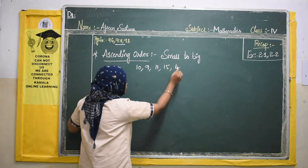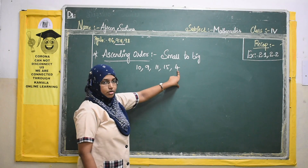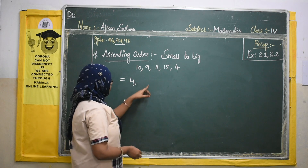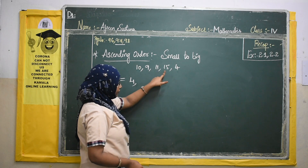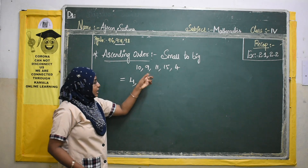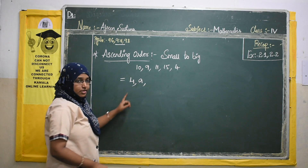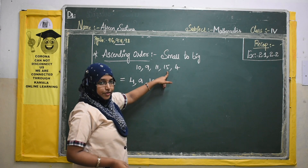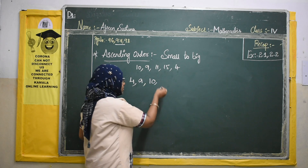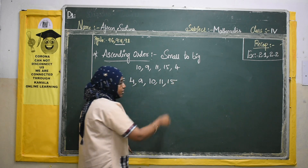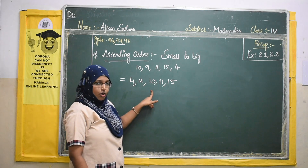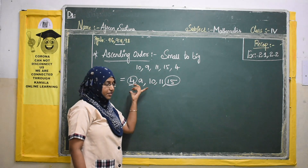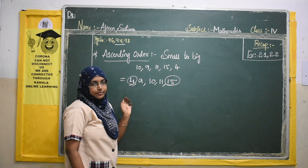Among these five numbers, which is the smallest? It is 4. So we write 4 first. Among the remaining — 10, 9, 11, 15 — which is the next smallest? It is 9. Then 10. Then the two left are 11 and 15; 11 is less than 15. So the ascending order is: 4, 9, 10, 11, 15. This is ascending order — writing from small to big.